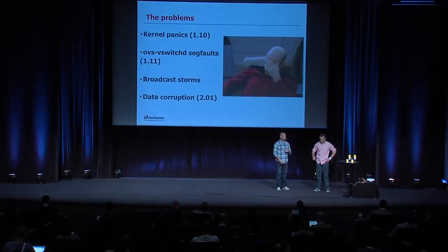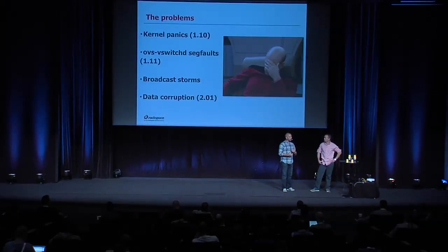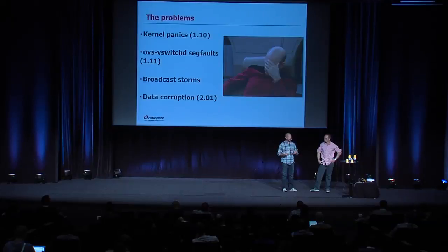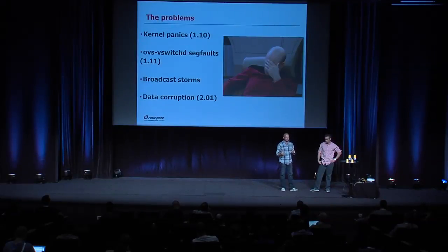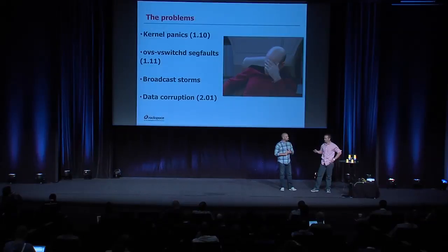One other point is the introduction of broadcast storms into the environment. The Neutron plugin agent is responsible for building the flows. If you restart Open vSwitch without restarting the plugin agent, the switches default to normal mode. Because you have the tunnel bridge, integration bridge, and provider bridges effectively cross-connected, you've introduced the ability to broadcast traffic and forward it out through all ports, quickly producing a broadcast storm. There's also extra complexity in having to compile the OVS kernel module for the kernel every time you upgrade.